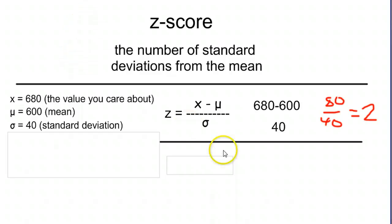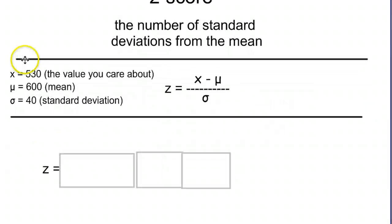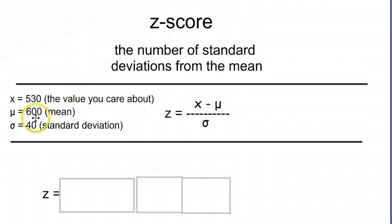The reason why we use the formula once in a while is it helps us when we have numbers that are a little bit less intuitive, like the following. This example has very similar numbers to the last one. Our mean is still 600, our standard deviation is still 40, but our value of interest, the x, is going to be 530 this time. So this value is going to change.